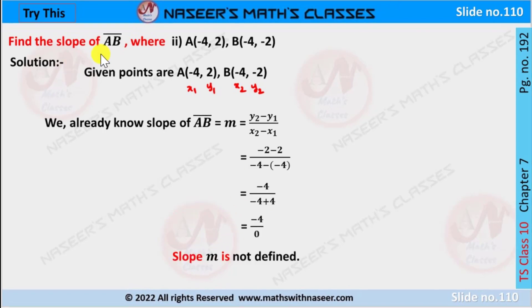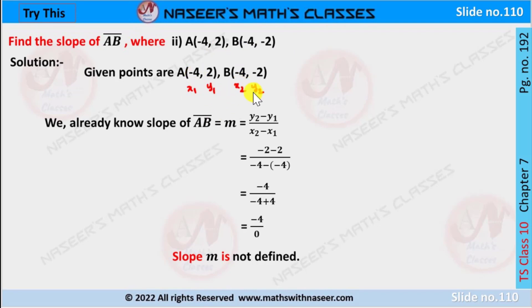Next, find the slope of AB where A is (-4, 2) and B is (-4, -2). Then x1 is -4, y1 is 2, x2 is -4, y2 is -2.